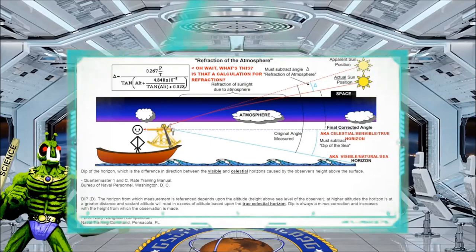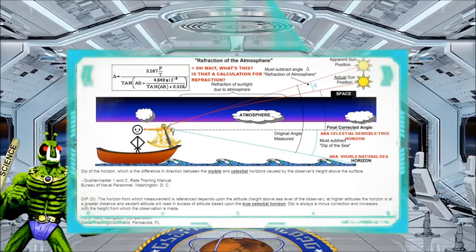If you are using something like this, the sextant, you're going to need a horizon for that. Well, reading from the U.S. Navy training documents, they have this to say about your horizon.